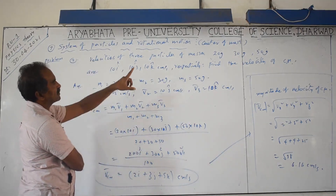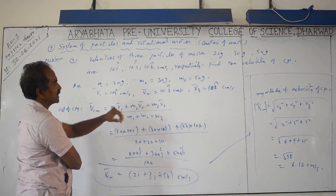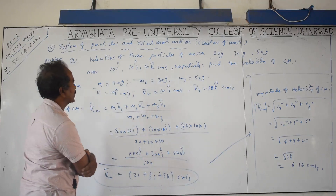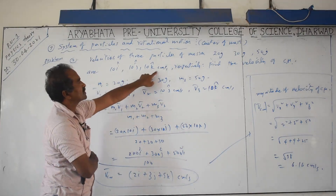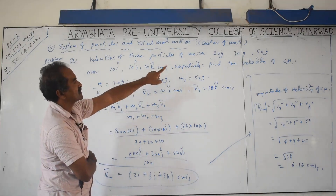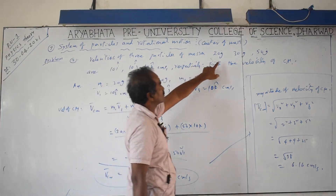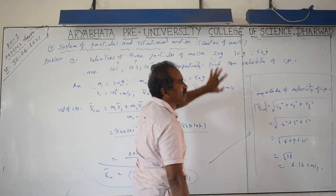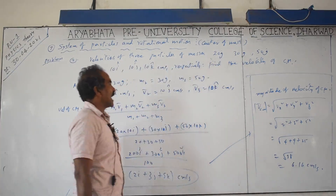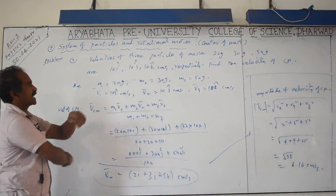The values are given in the CGS system and the result will also be found in the CGS system. Velocity is given in centimeters per second, and mass is given in grams. The small 'g' symbol is used for grams — do not confuse it with the acceleration due to gravity.